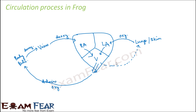The lungs perform respiration — taking in oxygen and giving out carbon dioxide. The deoxygenated blood sent to the lungs gets oxygenated there and is then returned to the left auricle. This is how blood circulation takes place in a frog: oxygenated blood reaches different parts of the body, and deoxygenated blood is taken away from those parts and sent back to the lungs or skin.